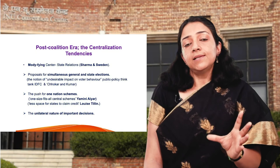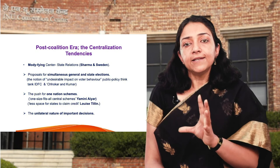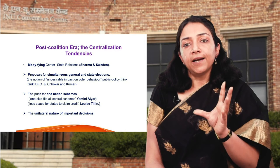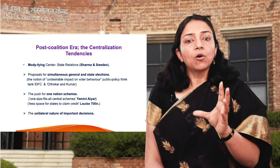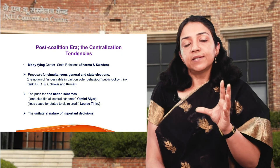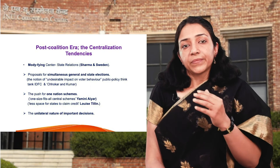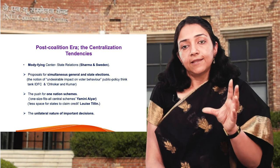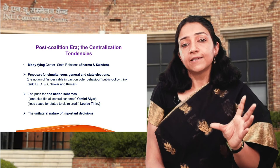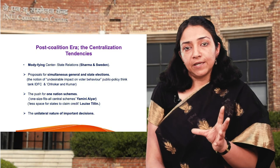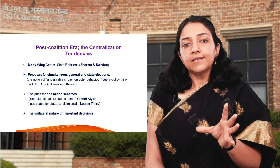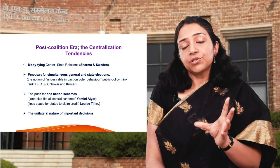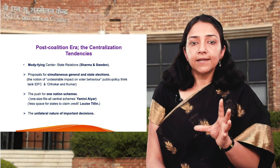The BJP government's proposal to forge simultaneous general and state elections is one indicator. A study by Kocher and Kumar and think tank IDFC gave the notion of 'unintended voting behavior,' finding there are 77% more chances that voters will vote for regional parties over national parties in simultaneous elections. The push of the central government for one-nation schemes like Ayushman Bharat and One Nation One Ration Card are also cited. Yamini Aiyar finds these are one-size-fits-all central schemes that erase the spirit of federalism.